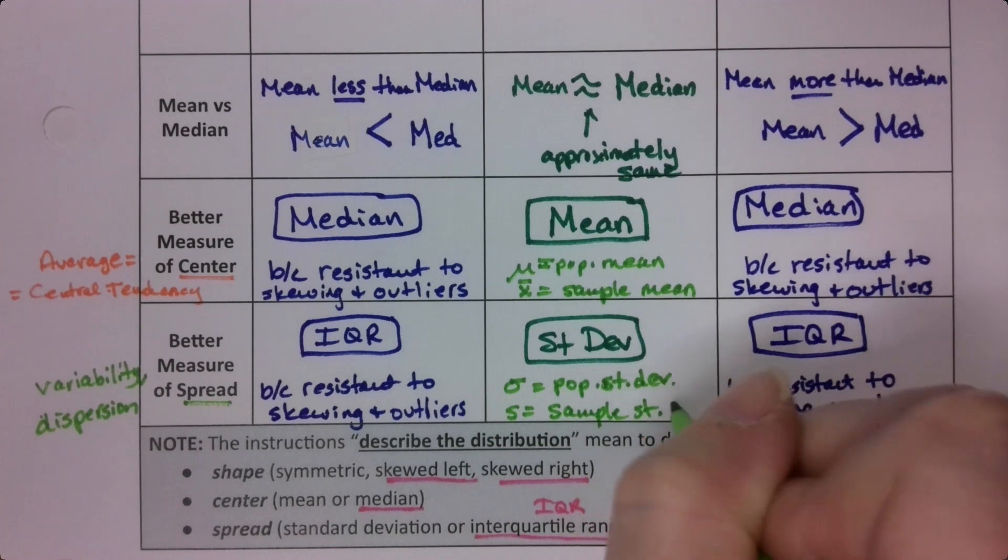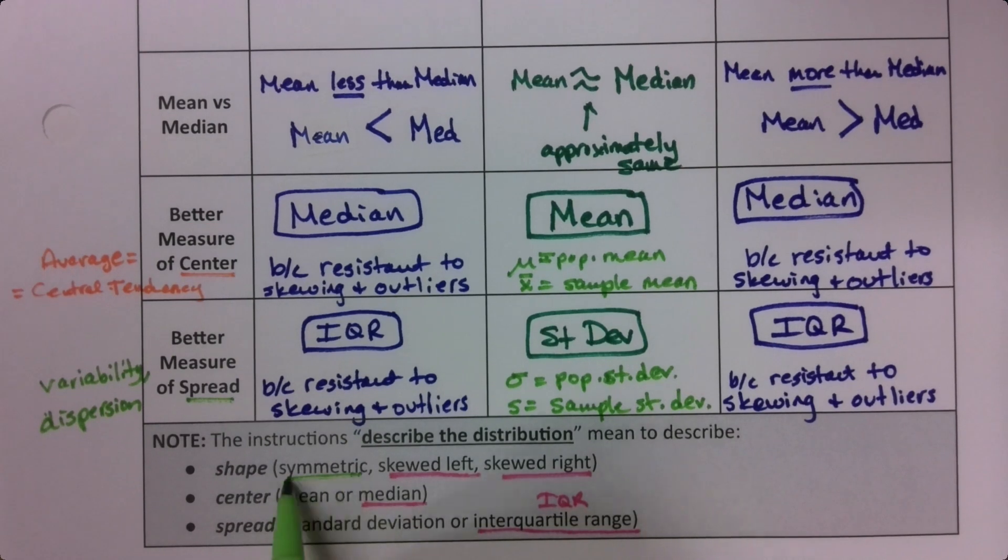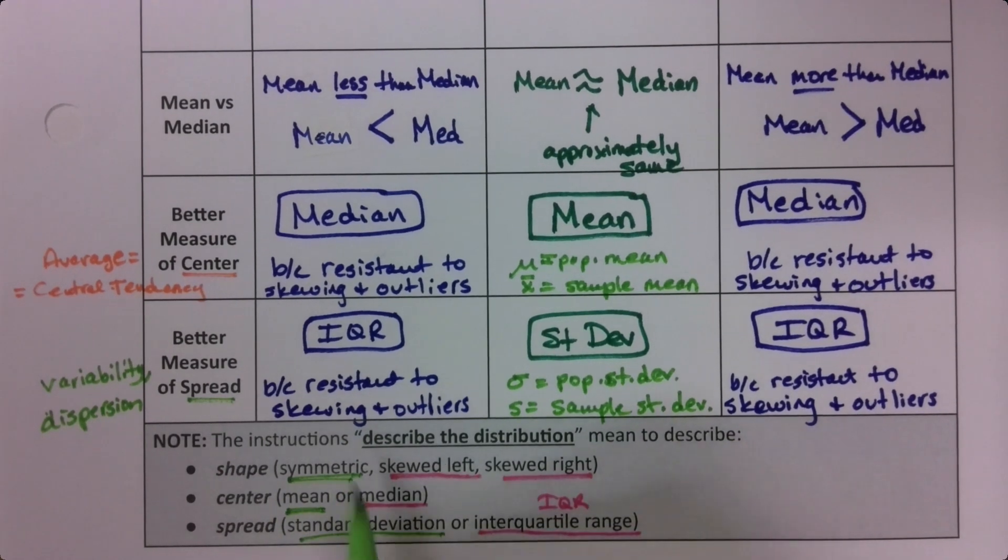And boy, howdy, will we be using these values all over the place. In chapter seven, eight, nine, ten, eleven, we'll be using these. So if your data set's symmetric, you're going to use the mean and the standard deviation, which we will chapter seven onward.